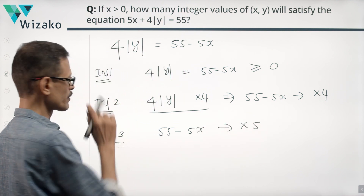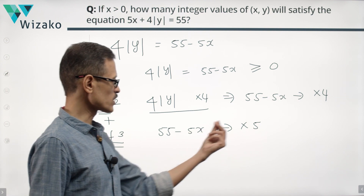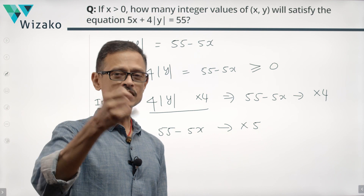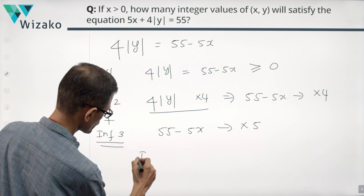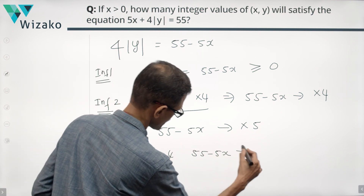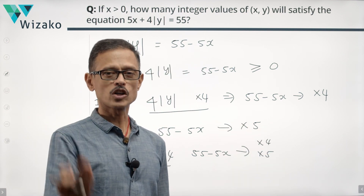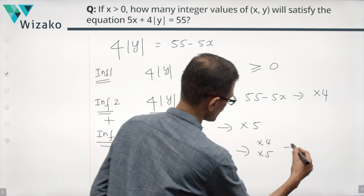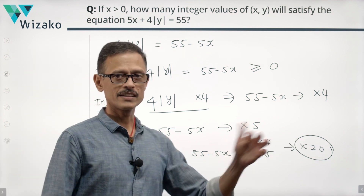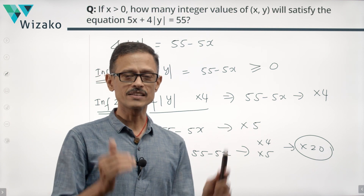Combining inference 2 and inference 3: inference 2 says 55 minus 5x is a multiple of 4, and inference 3 says 55 minus 5x is a multiple of 5. So 55 minus 5x is a common multiple of 4 and 5, which means this number is a multiple of 20. The most important combined inference is that 55 minus 5x is a multiple of 20, and it should be a non-negative number.